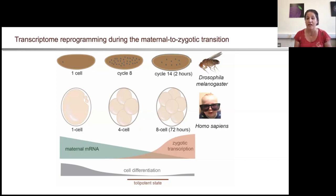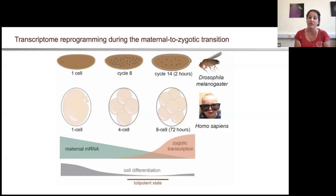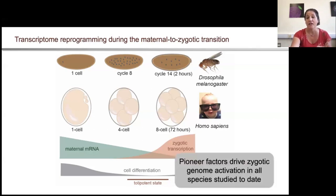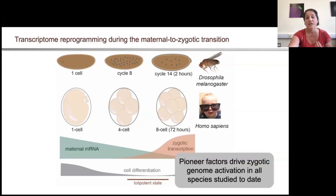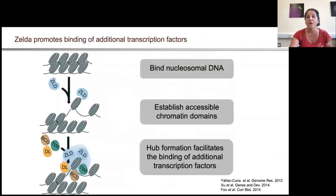Not only is the transcriptome being reshaped, but also the developmental potential of these cells is being reshaped as they move from the two specialized germ cells — the sperm and the egg — to the totipotent cells of the early embryo. In all organisms studied to date, pioneer factors drive activation of the zygotic genome. The first major activator of the zygotic genome was identified in Drosophila by Chris Russo's lab, and there's a protein called Zelda.